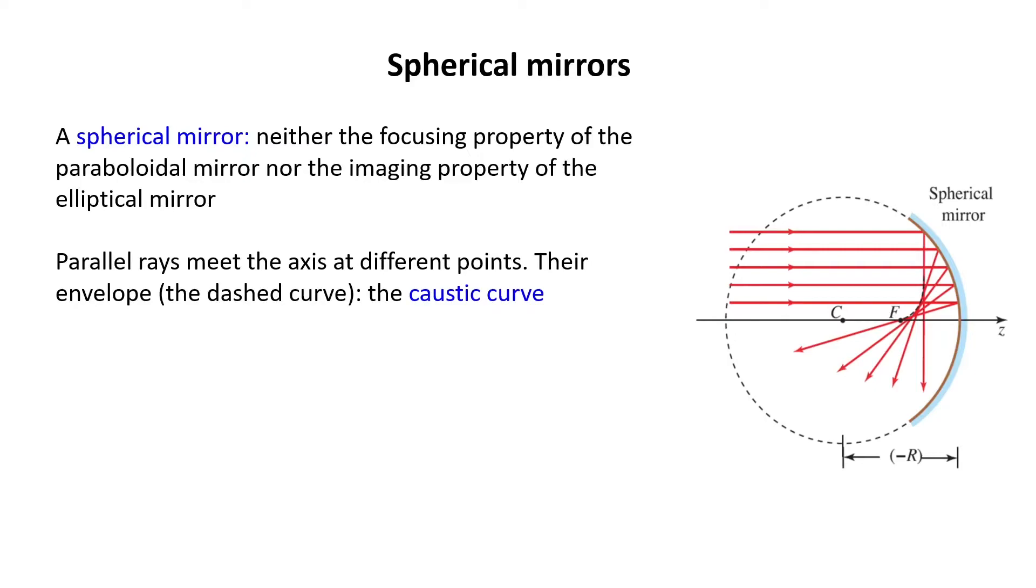As you see, the parallel rays meet the optical axis at different points. Here, the optical axis is the diameter of the sphere.